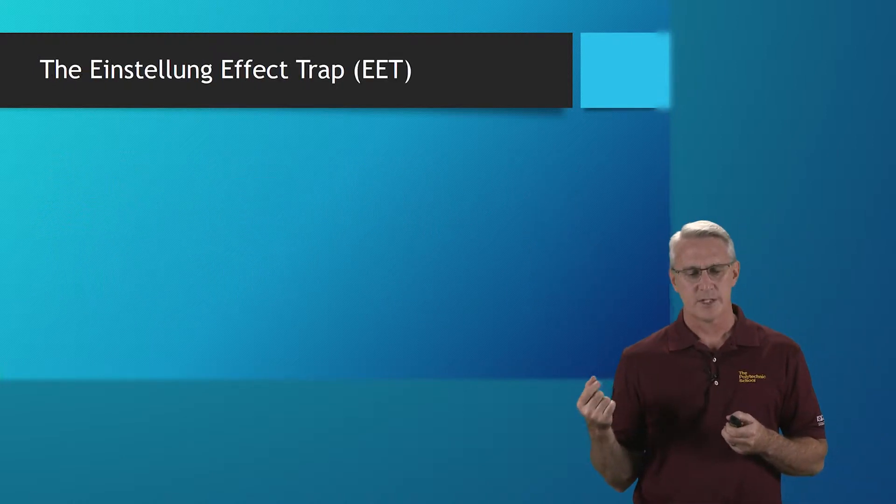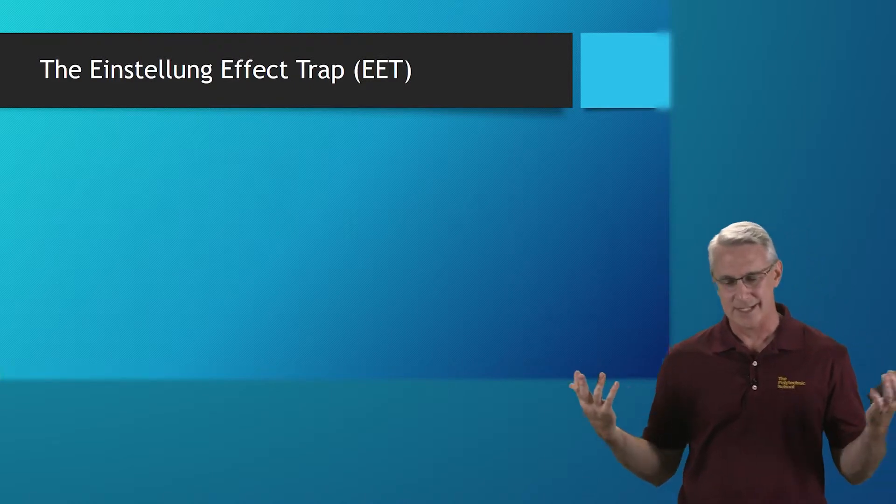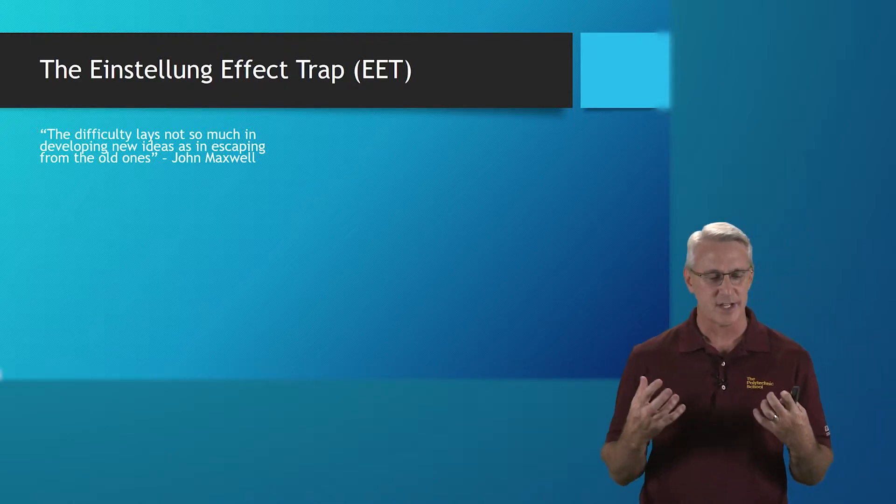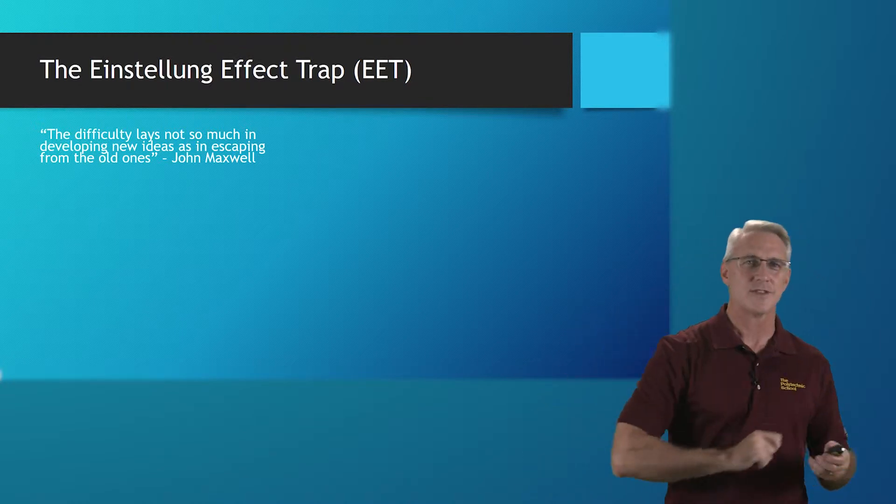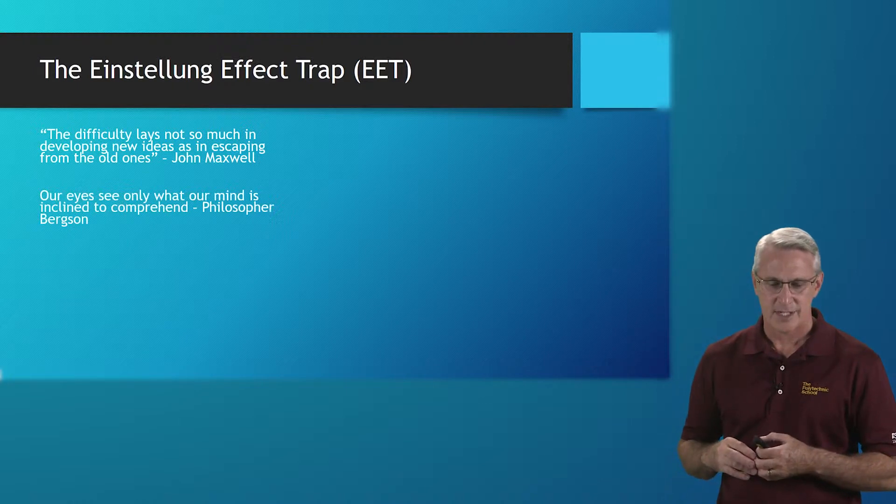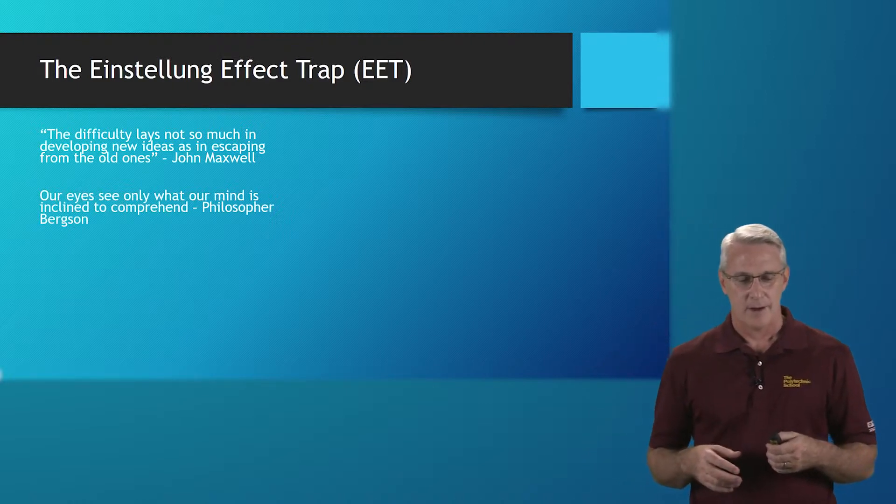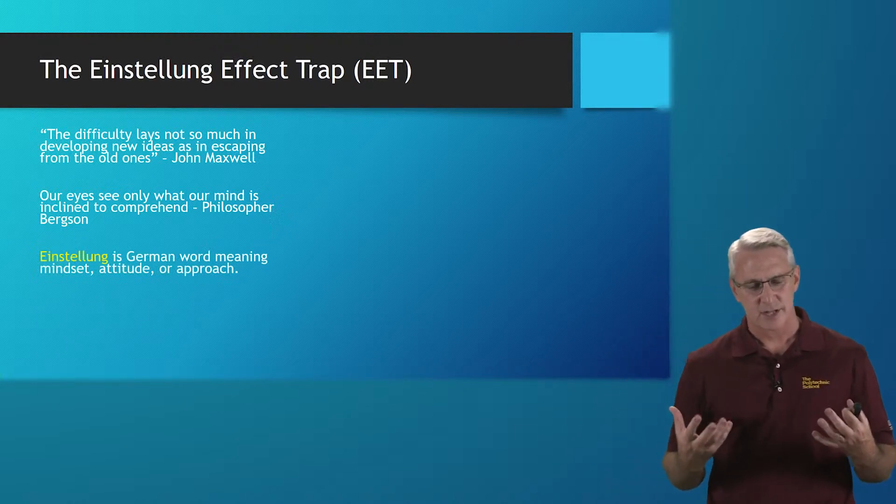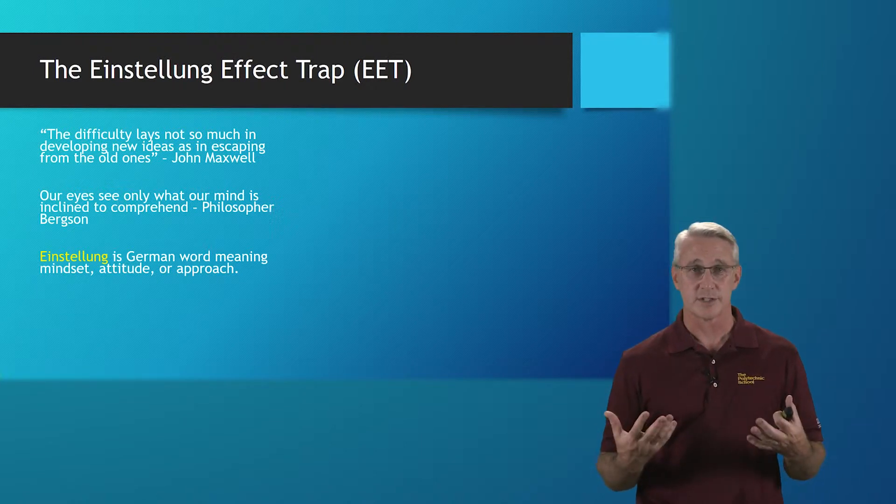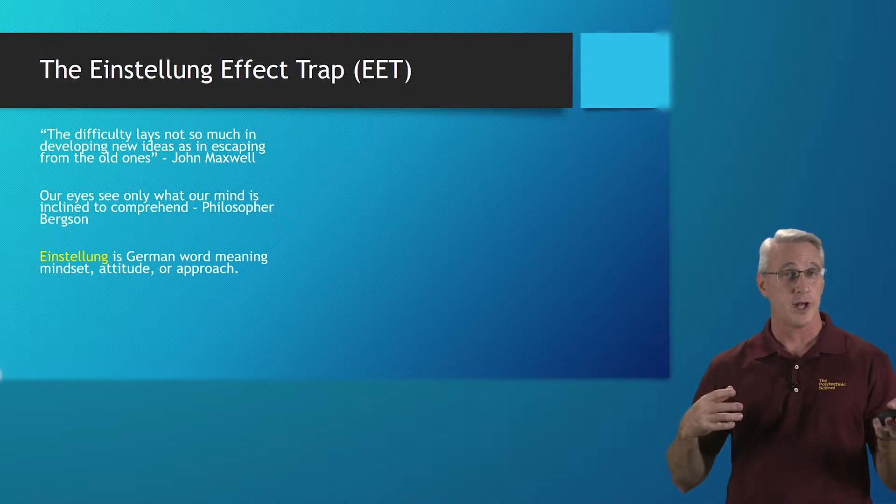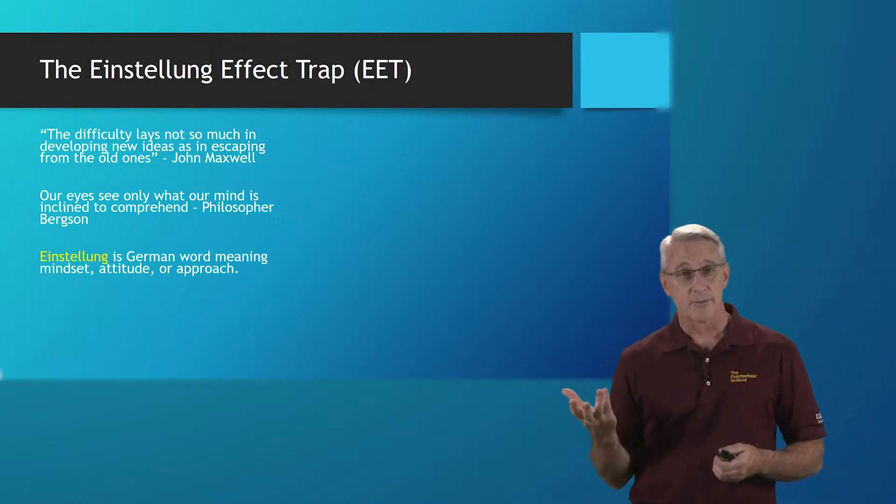The other thing we're trying to do is avoid something called the Einstein effect trap or the EET. What does this mean? The problem that we have, and what the Einstein effect gives us, is the difficulty lays not so much in developing new ideas, but we have to get out of our same ways of thinking from the old ideas. This comes from John Maxwell who came up with the theory of electromagnetism. Our ideas see not only what our mind is inclined to comprehend, but we get stuck in that. Philosopher Bergson talks about this. It actually means mindset, attitude or approach, it's a German derivative.